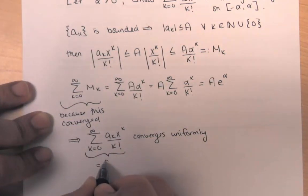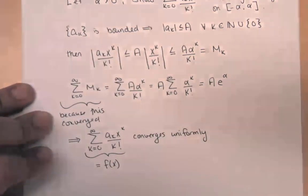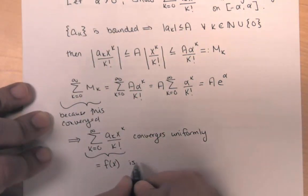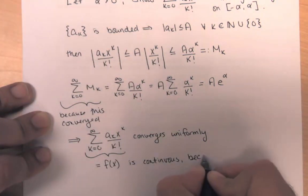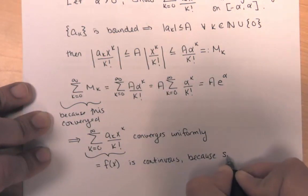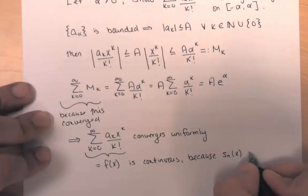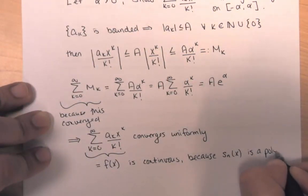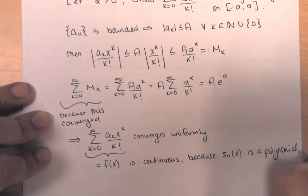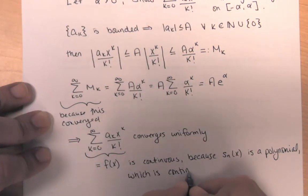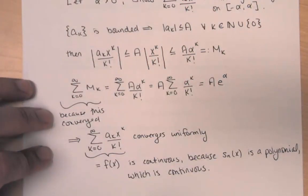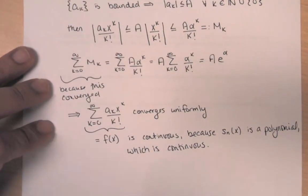Whatever function the series converges to is continuous, because every partial sum is a polynomial, which is continuous. And we've proven our result.